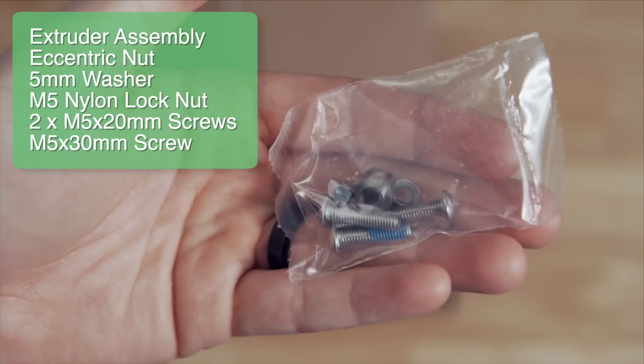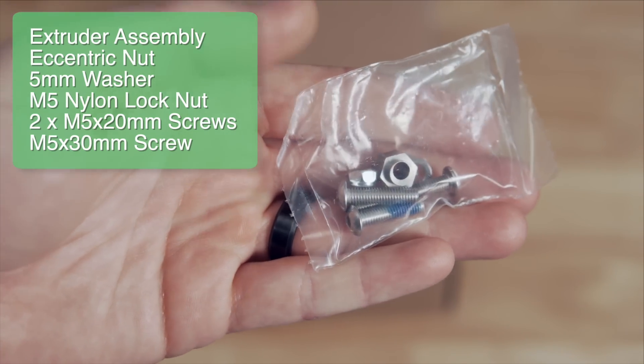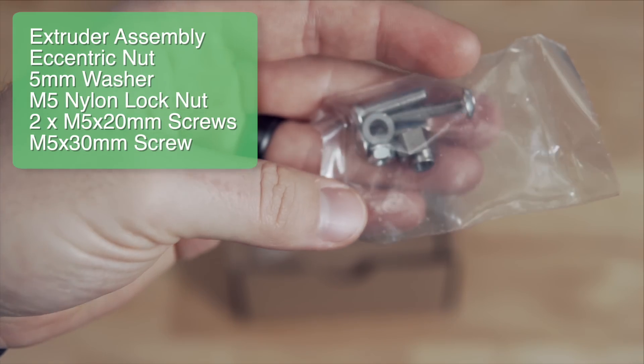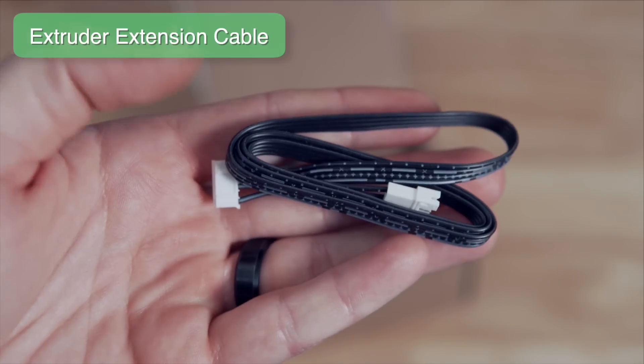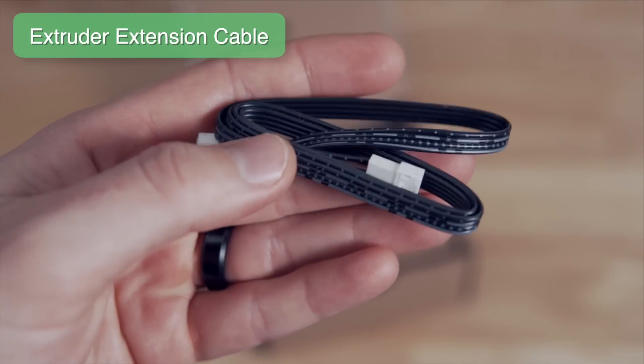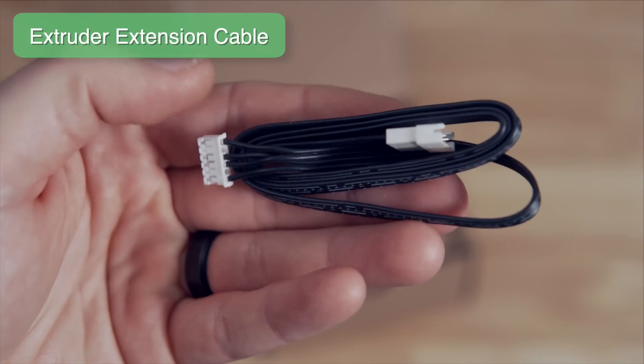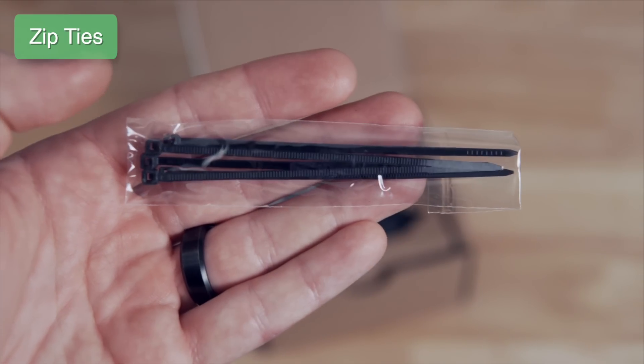All of our hardware that's going to be used to transfer over our roller wheels from the stock hotend to the Micro Swiss NG body. An extruder extension cable that we'll need since we're moving it from a Bowden to a direct drive extruder. Some zip ties for cable management.